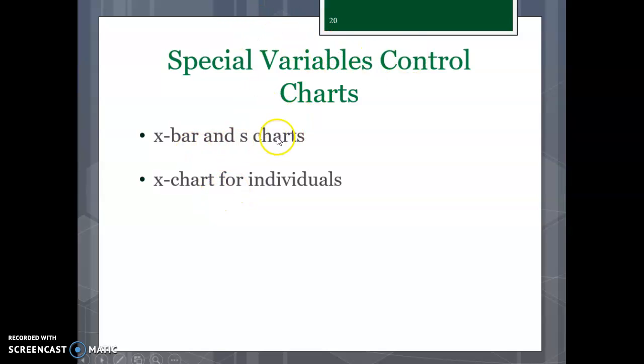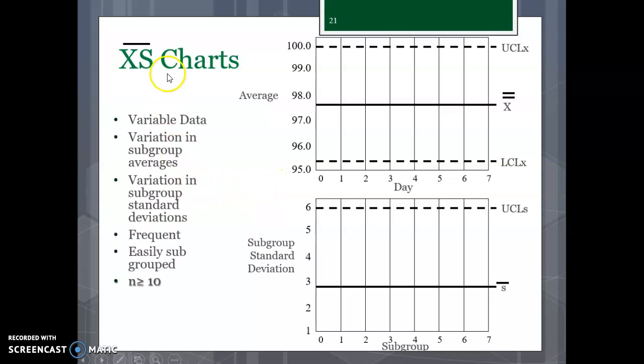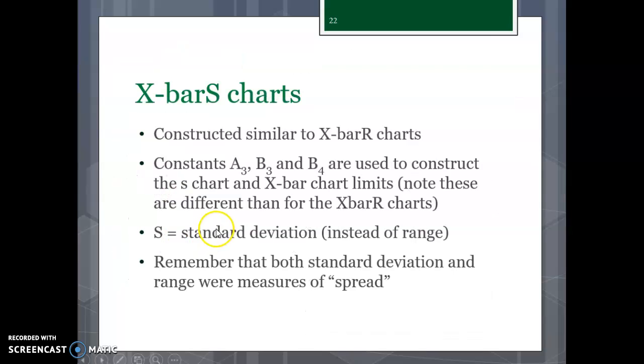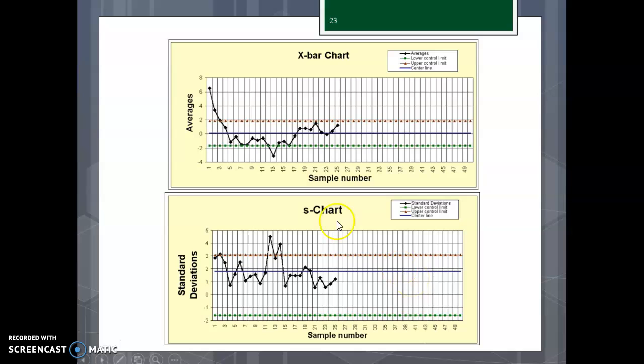Special variables control charts, X-bar and S-chart, and X-chart for individuals. X-bar and S-charts are for standard deviations. So if you don't have a lot of data, you might look at the deviations, the standard deviation in all the data that you have collected. Again, this is all generated in Excel. You don't have to worry about calculating it. Again, you just have to know which one of these you want to generate. So they're constructed similar to X-bar R charts. And then they use these as a standard deviation instead of the range. So remember, both standard deviation and the ranges were measures of a spread. How, again, how far apart are your needs and what you're looking for? So here's just another couple examples here. This is the X-bar, and this is the standard deviation part.